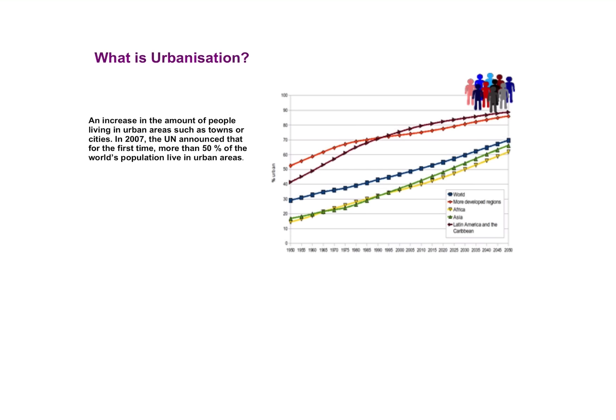All urbanisation is, is more people moving into towns and cities. We're seeing a huge trend worldwide of more people migrating into towns, cities or urban areas. That key fact on screen is pretty interesting — in 2007 the UN announced that more than 50% of the world's population live in urban areas. The graph here shows us that across different continents, the average trend from 1812 to 2020 is that more people are now in urban areas.